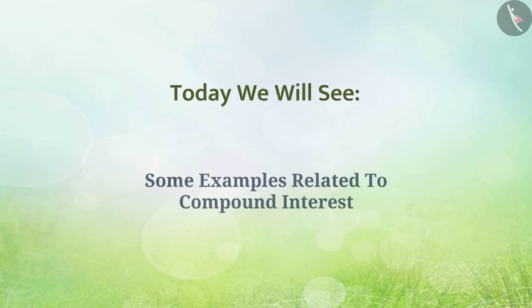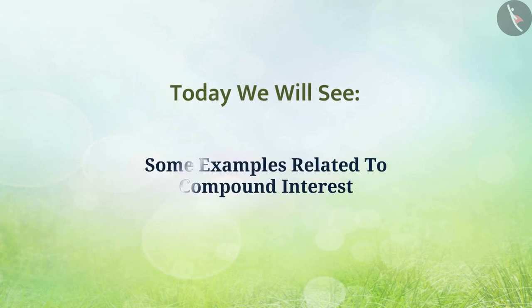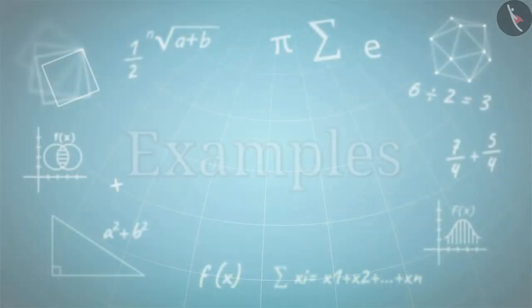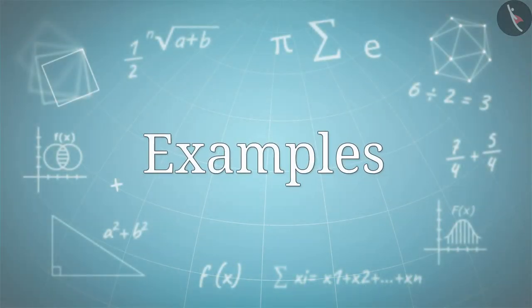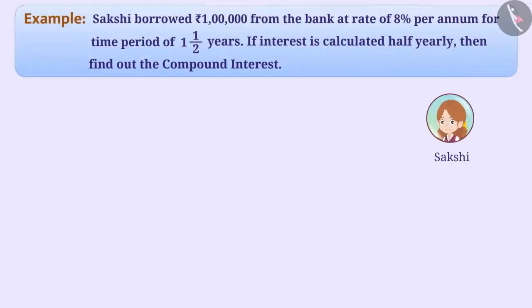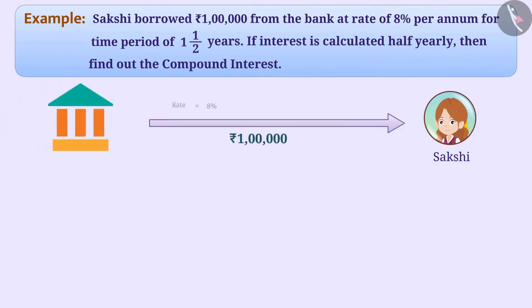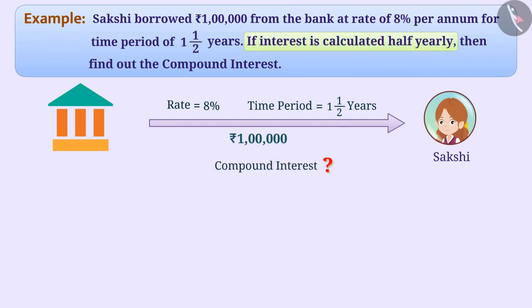Today we will see some examples related to compound interest. Sakshi borrowed Rs. 1 lakh from the bank at the rate of 8% per annum for a time period of one and a half years. If interest is calculated half yearly, then find out the compound interest.